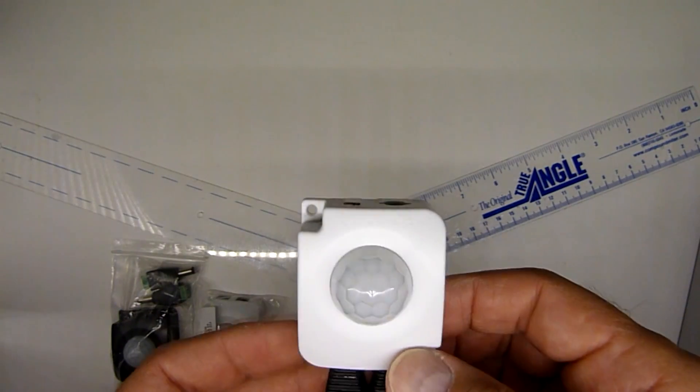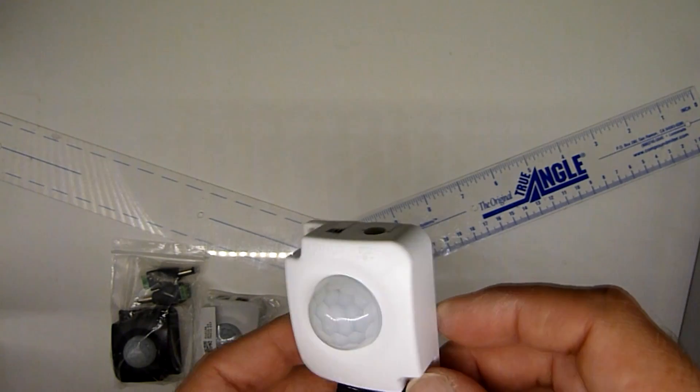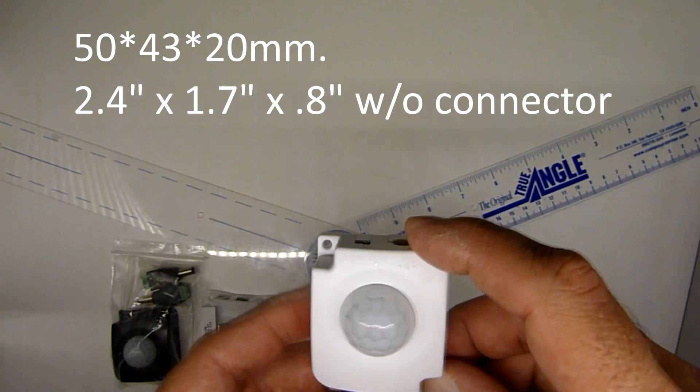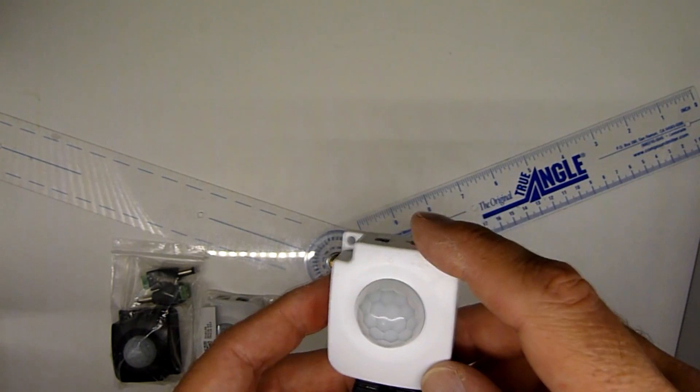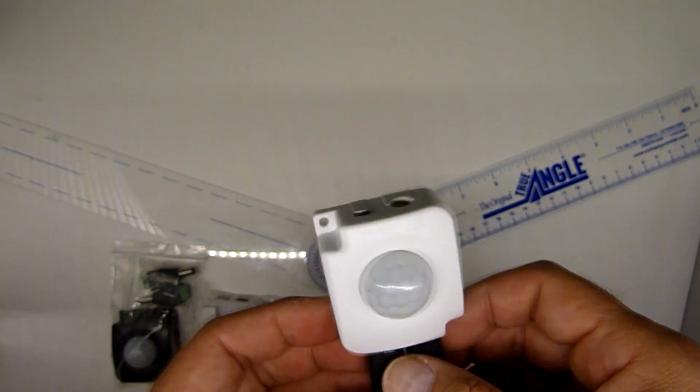This 12-volt PIR motion sensor for indoor use is the smallest of the ones I've tried. Its dimensions are about 2.4 inches by 1.7, and it's about 0.8 inches thick. Now, you do have to add some length here because you'll notice the connectors are actually barrel connectors, and we'll discuss that in a second.